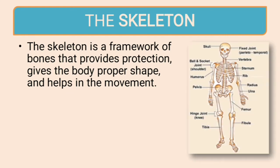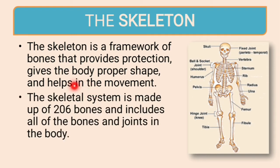Now comes the important part — the skeleton. The skeleton is the framework of the bones. As you can see, there are different bones that provide protection, give our body proper shape, and help in movement. We can walk because of the joints in the skeleton. The skeletal system is made up of 206 bones and includes all of the bones and joints in the body.